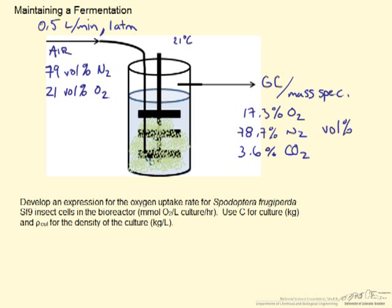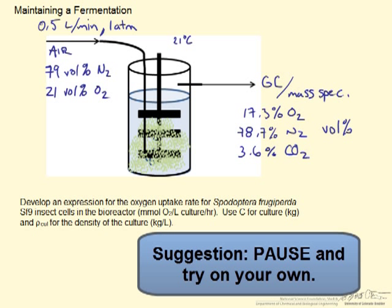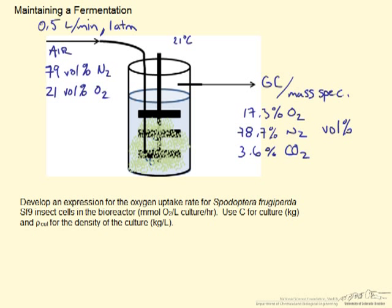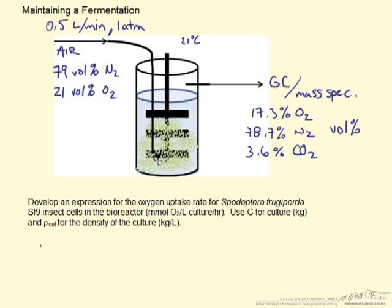So we need to figure out how we are going to determine this oxygen uptake rate for the cells that are in this bioreactor. We could do this by performing a material balance. So we will start with our general material balance for nitrogen. In this case nitrogen won't react with the cells. It is an inert.